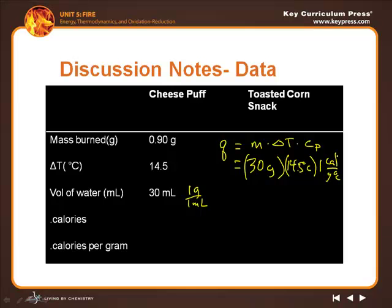That's why water is so helpful in these calculations. We multiply 30 times 14.5 on our calculator times 1, and this equals a value of 435 calories. That's the amount of heat that this particular Cheeto gave off.